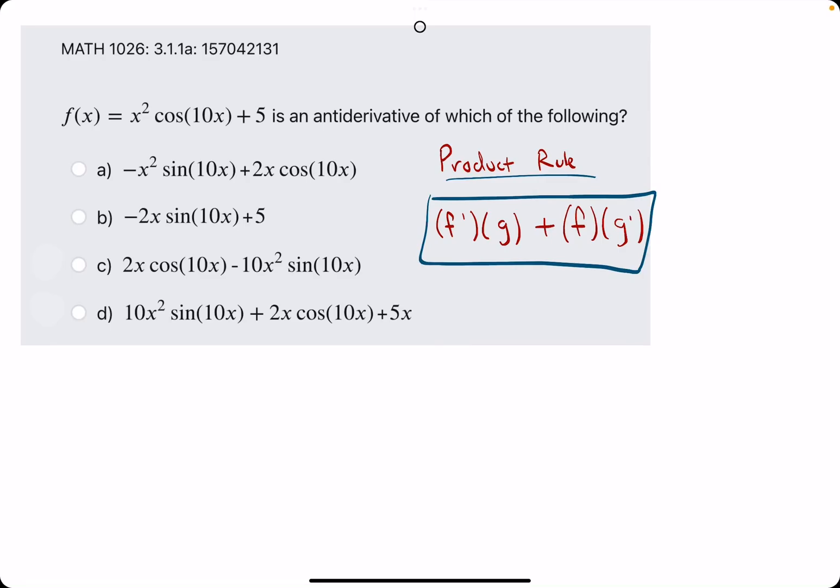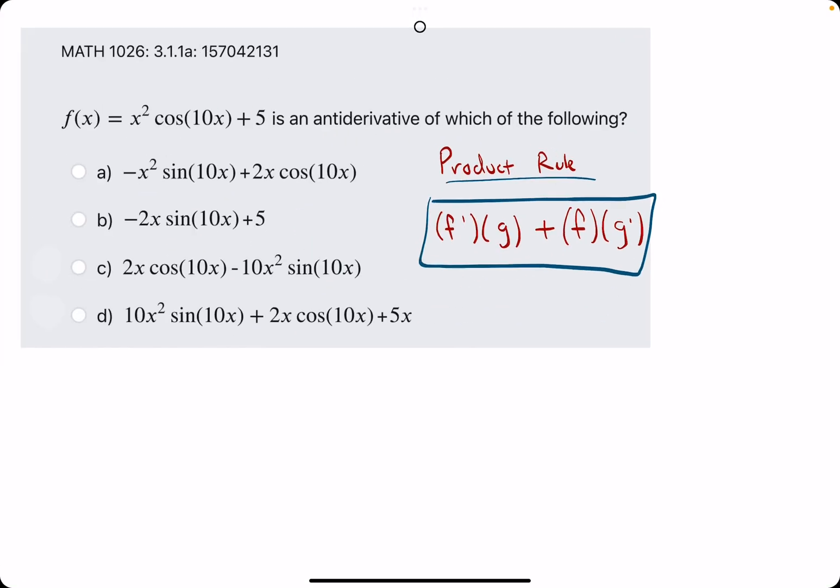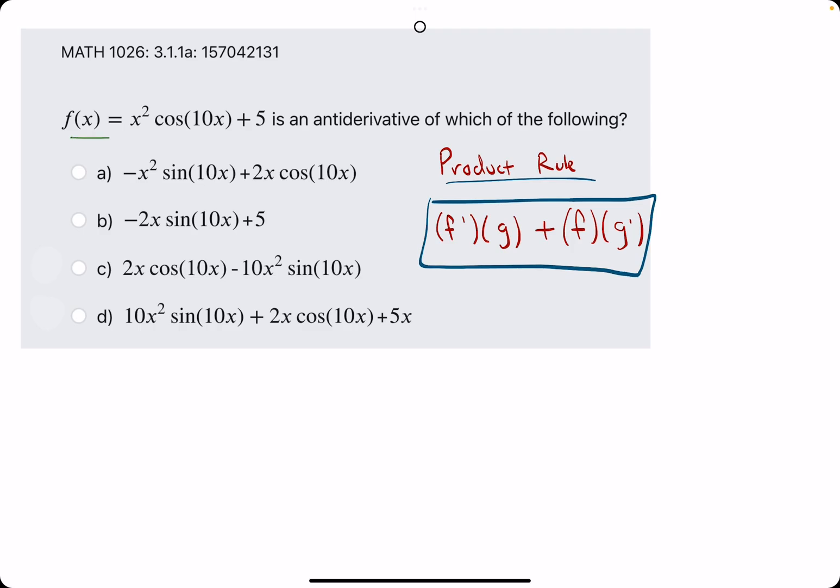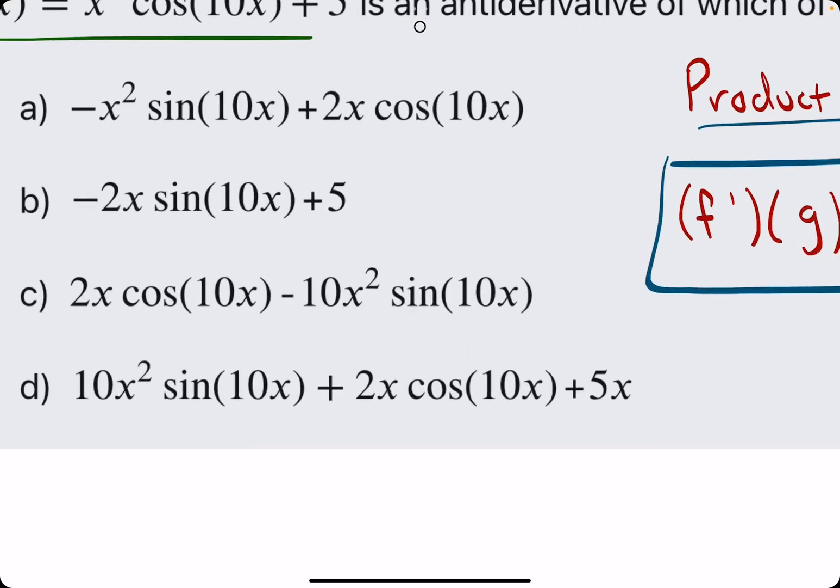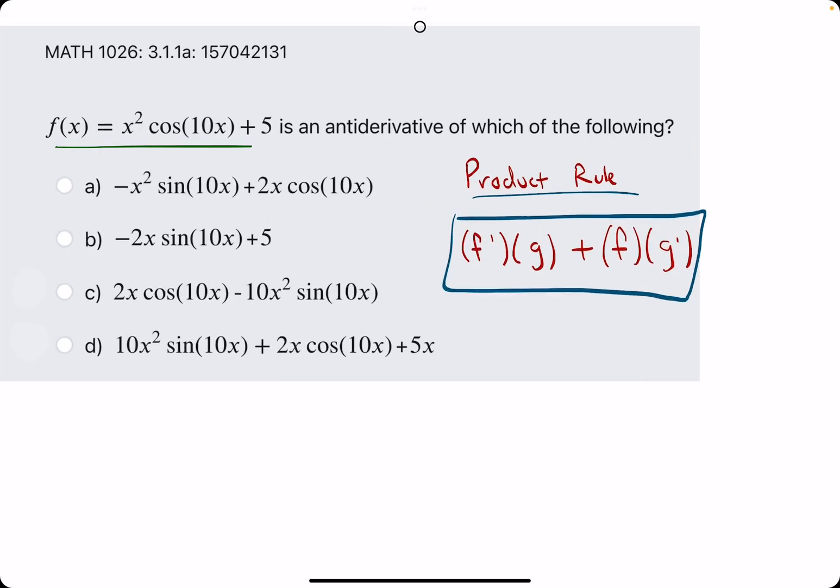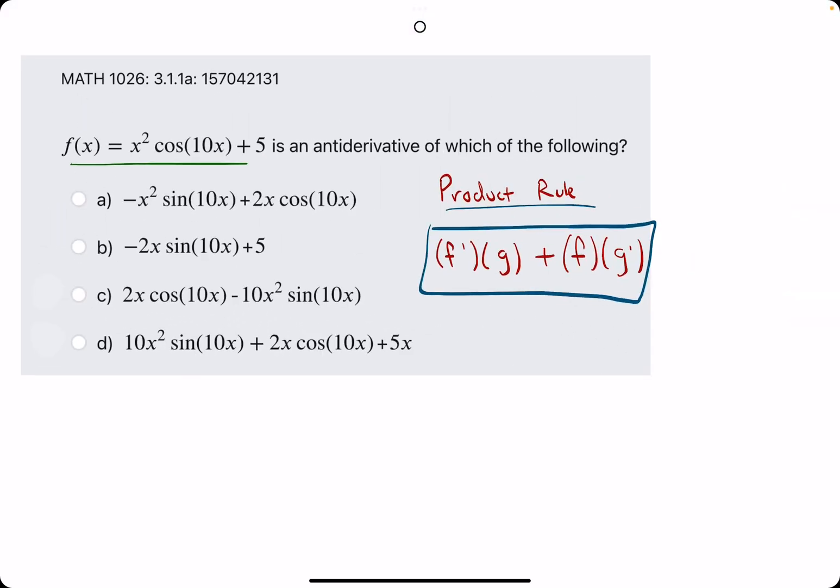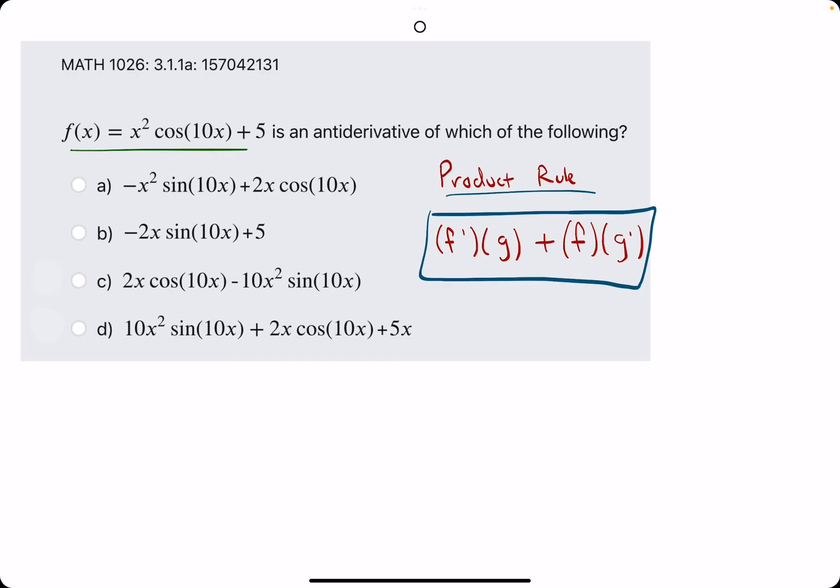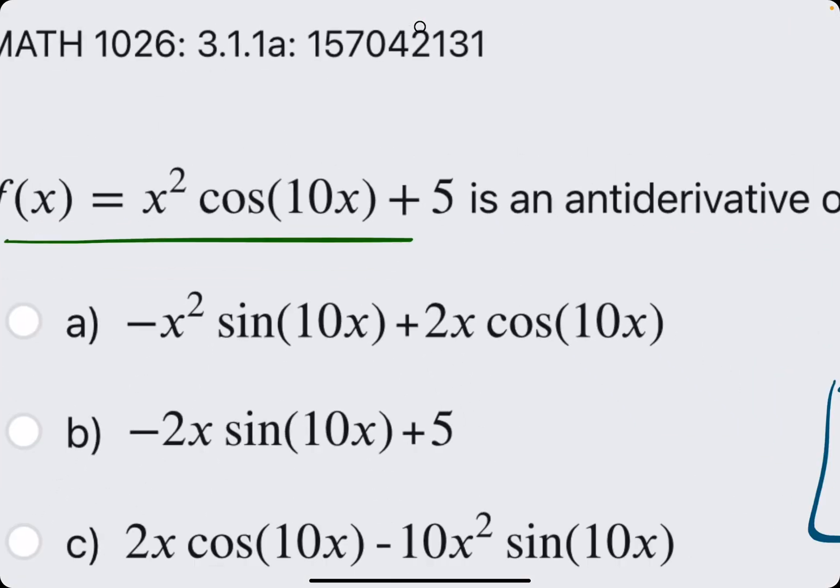Okie dokie. In this problem, we will review the product rule. They give us this function and they say this is an antiderivative of which of the following, which means we just take the derivative of this to see which one of these matches the derivative of this.